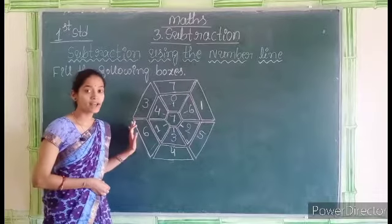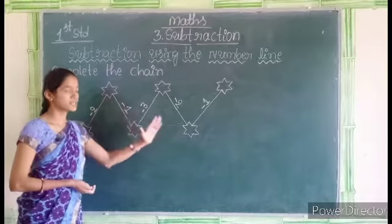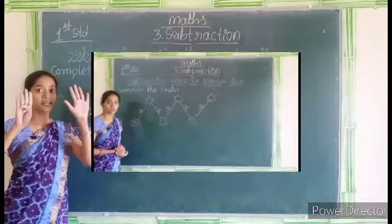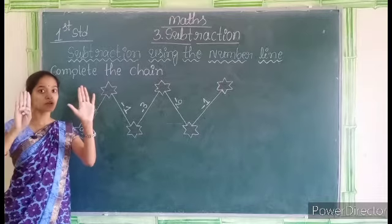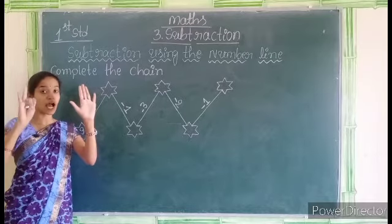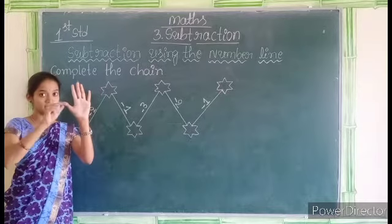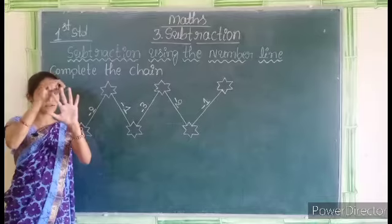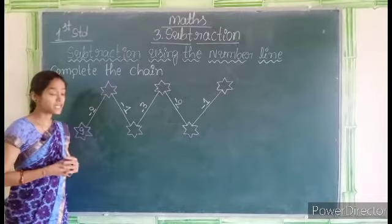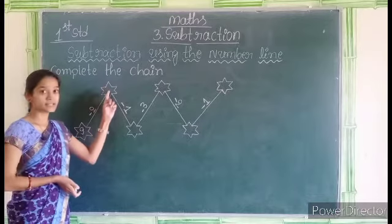Like this we can fill these boxes. Students, we have to complete this chain. Let us see: 9 minus 2. 9, we have to remove 2 from 9: 1, 2. How many fingers left? Let's count: 1, 2, 3, 4, 5, 6, 7. So 9 minus 2 is 7, and that 7 should be written in this star.